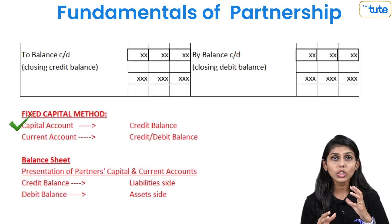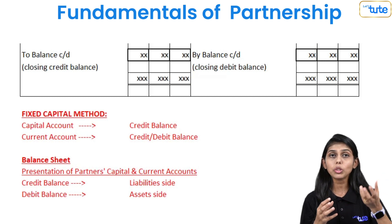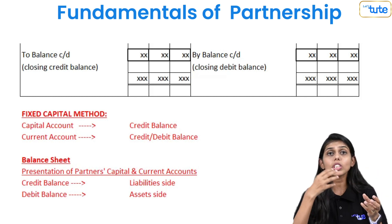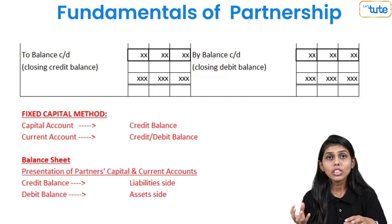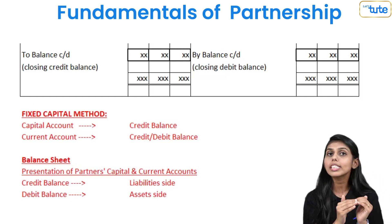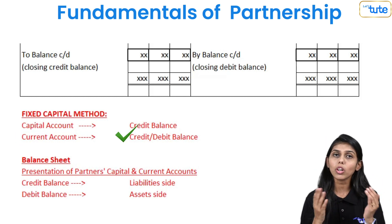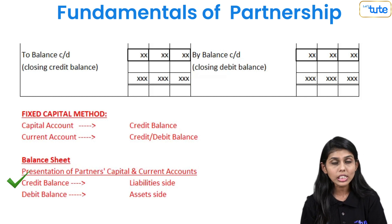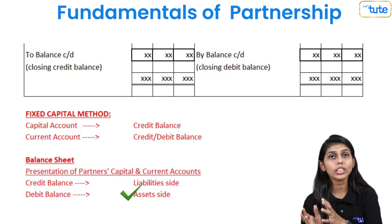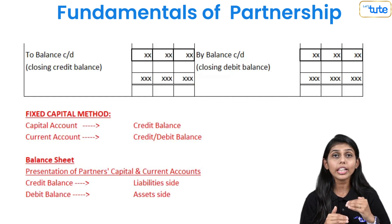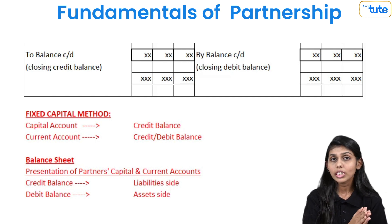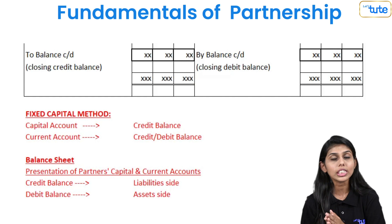In the partner's capital account under the fixed capital method, there will always be a credit balance, since it holds the capital balance, any additional capital, or withdrawal of capital — so no debit balance is possible there. However, in the partner's current account, both debit and credit balances are possible. If the balance is a credit balance, it is presented on the liability side of the balance sheet. If it is a debit balance, it is presented on the asset side of the balance sheet.